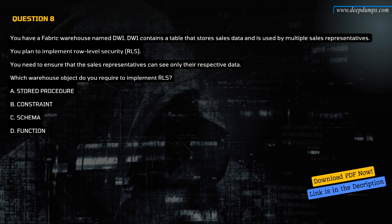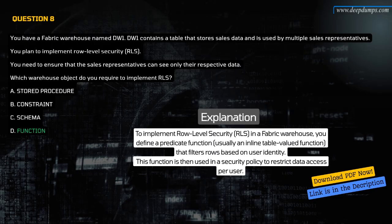Question 8. You have a Fabric warehouse named DW1. DW1 contains a table that stores sales data used by multiple sales representatives. You plan to implement row-level security (RLS). You need to ensure sales representatives can see only their respective data. Which warehouse object do you require to implement RLS? A. Stored procedure. B. Constraint. C. Schema. D. Function. The correct answer is D. Function. To implement RLS in a Fabric warehouse, you define a predicate function — usually an inline table-valued function — that filters rows based on user identity. This function is then used in a security policy to restrict data access per user.